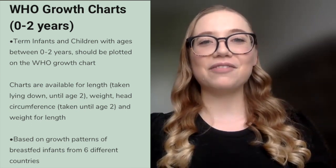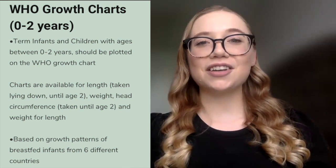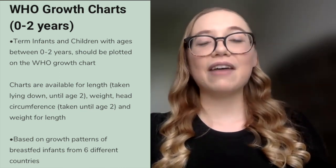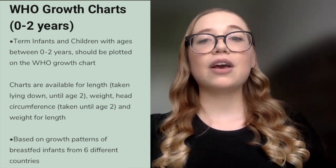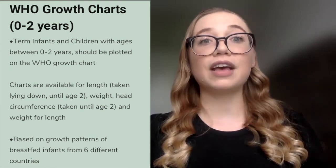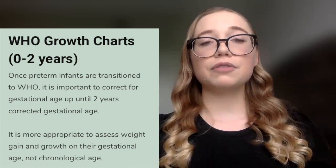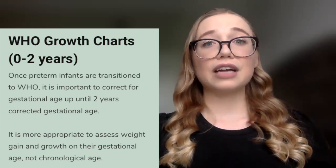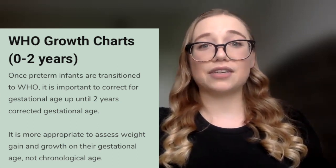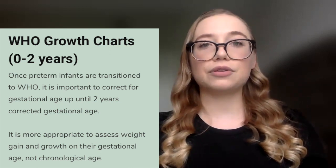Term infants and children between 0 to 2 years of age should be plotted on the WHO, or World Health Organization, growth charts. Charts are available for weight, length — remember that length should be taken in a lying-down recumbent position, usually with a length board — head circumference, which should be taken up until 2 years of age, and weight for length, which tells us the proportionality of the child. These WHO growth charts were created based on data from six different countries looking at breastfed infants. A special note for preterm infants plotted on these charts: it's important to correct for gestational age up until 2 years of age, because it's not fair to compare a healthy term 3-month-old to a preterm infant with a chronological age of 3 months who was 3 months early and is therefore corrected to 0 months.